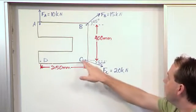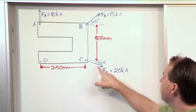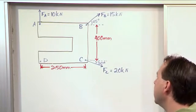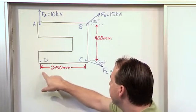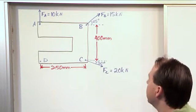And then here we have a force coming out of this corner, 20 kilonewtons, but it's at a 30 degree angle down from the horizontal. And we have some distances here, 250 millimeters, 400 millimeters.